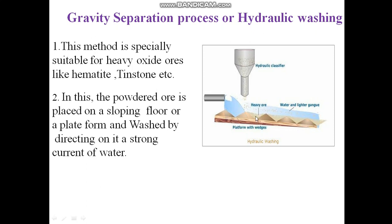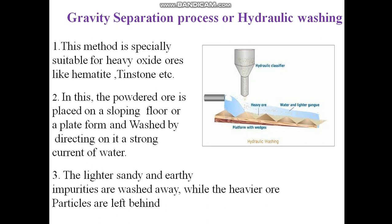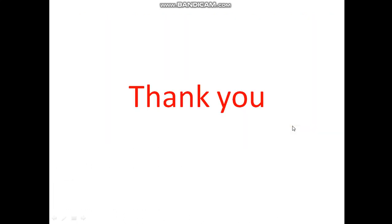The heavy ore particles get settled down in the wedges, whereas the lighter ore particles are flowed away. The lighter sandy and earthy impurities are washed away while the heavier ore particles are left behind in the wedges. This was all about the gravity separation method or the hydraulic process, in which we have seen both different types of methods for separating heavier and lighter ore particles. Thank you.